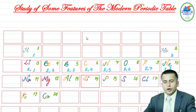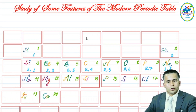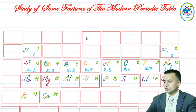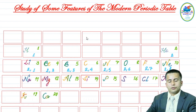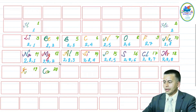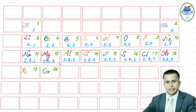Starting with sodium, one more shell — the M shell — is added. So K, L, and M are the three shells present from sodium to argon. For example, argon contains two electrons in the K shell, eight electrons in the L shell, and eight electrons in the M shell, giving it the octet electronic configuration.